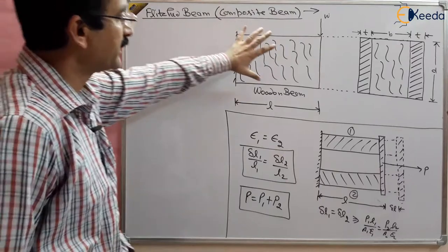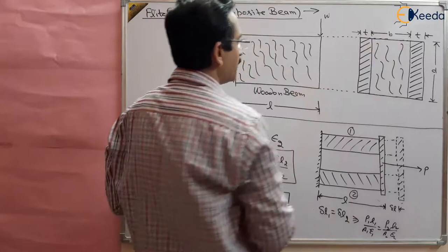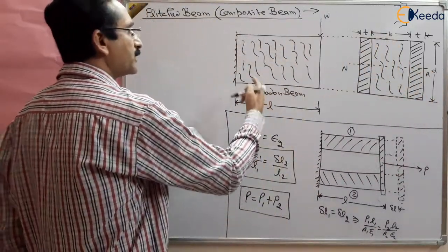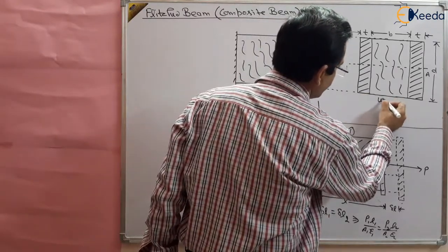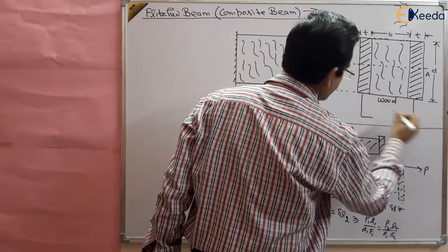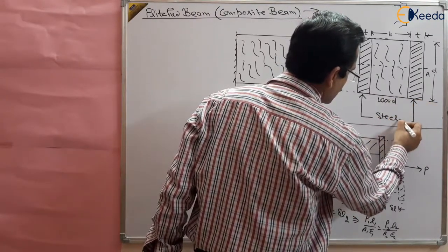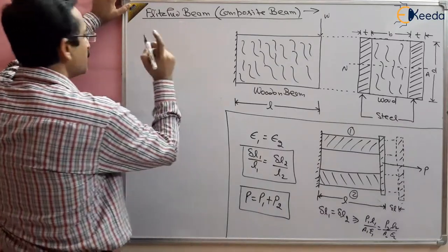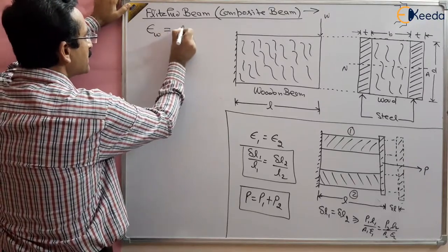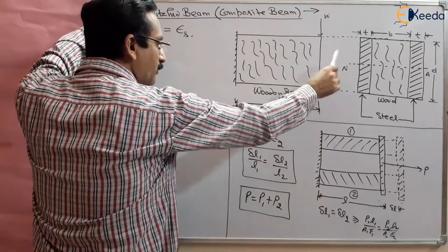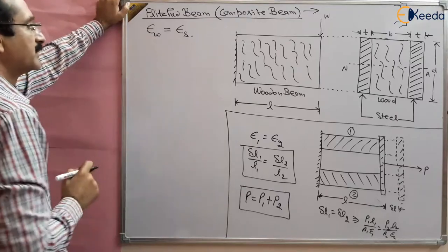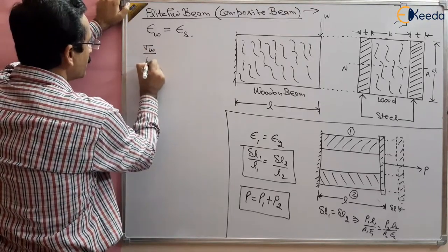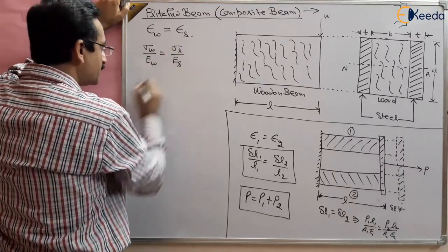Same will be the case here for the flinched beam. The strain developed in wood will be equal to the strain developed in steel. So two equations can be obtained: strain developed in wood equals strain developed in steel. And what is strain? Strain is stress upon modulus of elasticity.